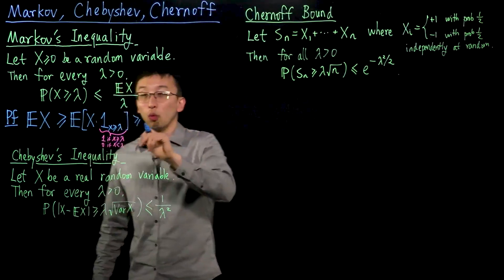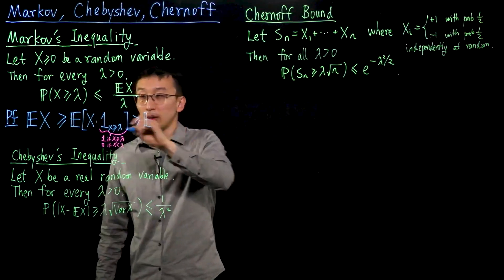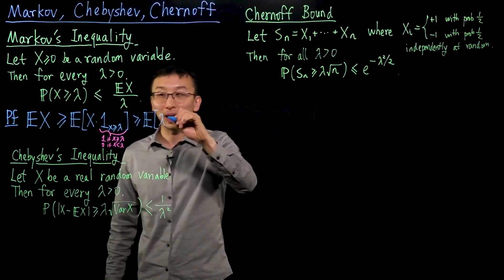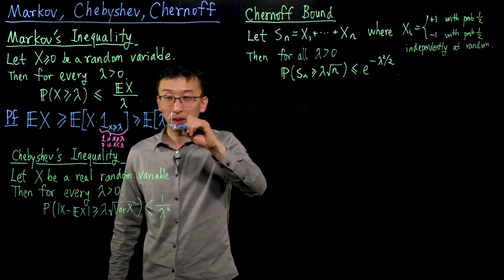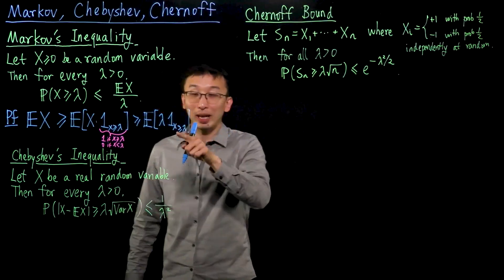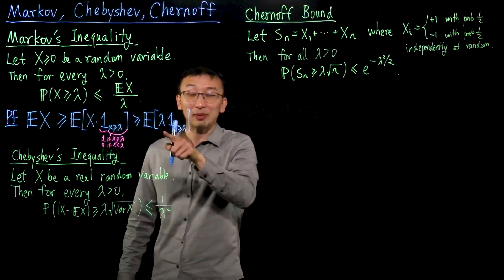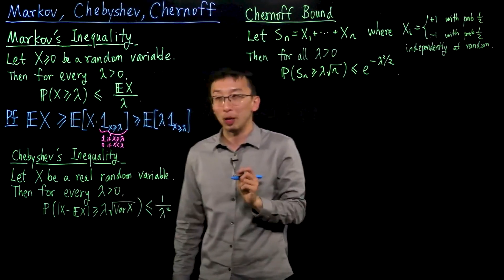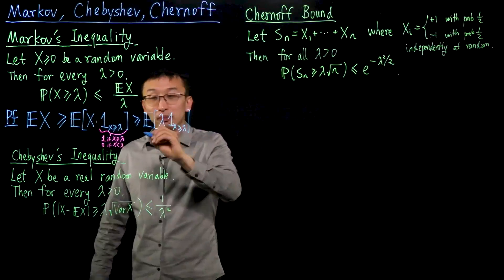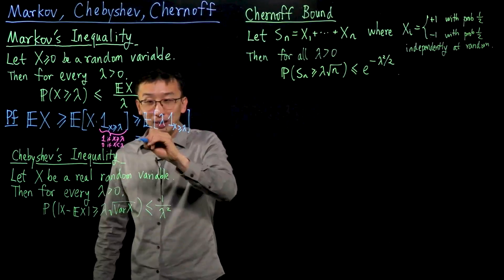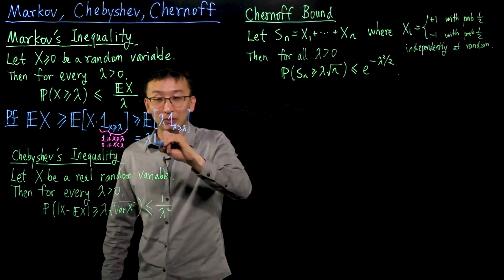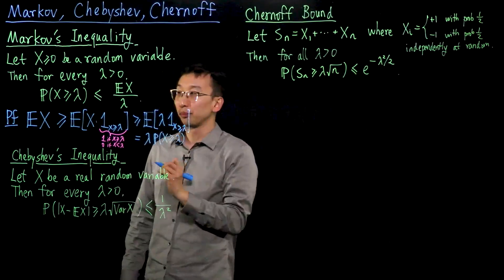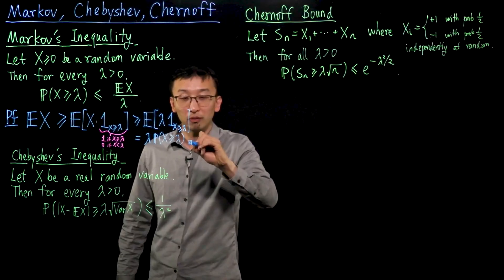Next, the expression inside the expectation is at least lambda times the indicator of x being at least lambda, because when x is at least lambda, x is at least lambda; otherwise both sides are 0. So this inequality holds as well. And finally, we can pull out the lambda and get lambda times the probability that x is at least lambda. So this finishes the proof of Markov's inequality.